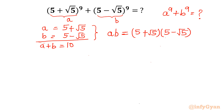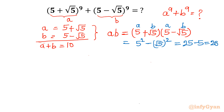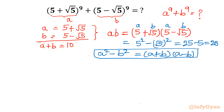Using the difference of squares formula (A+B)(A−B) = A²−B², here A is 5 and B is √5. So we get 5² minus (√5)², which is 25 minus 5, giving us AB = 20. That is equation number 2.